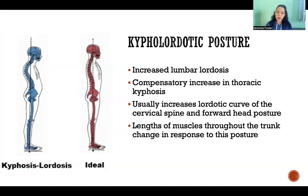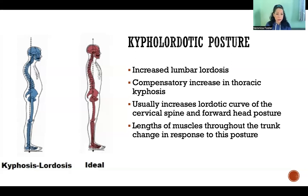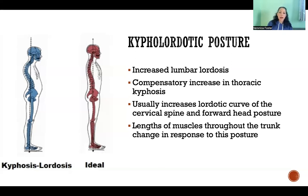In kypholordotic posture, you see changes in the lengths of muscles throughout the trunk, because certain muscles will lengthen or shorten in response to this posture. If somebody is in this posture chronically, those muscle length changes can become chronic as well, resulting in muscles that are hypertonic and hypotonic. I included a link in the description to cover what hypertonicity and hypotonicity mean.